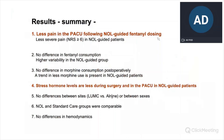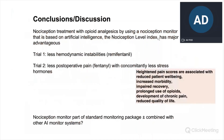The conclusions of the two studies are that when you use a rapid-acting opioid like remifentanil, NOL-guided dosing results in less hemodynamic instabilities. In the fentanyl study, we saw less postoperative pain and less stress hormones. We believe this is important because high pain scores are associated with reduced patient comfort, increased morbidity, longer recovery times, prolonged use of opioids, possibly even chronic pain, and reduced quality of life.